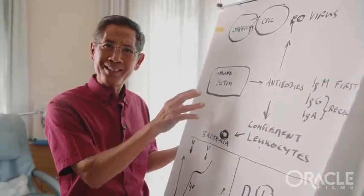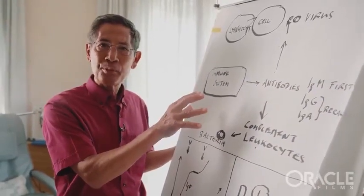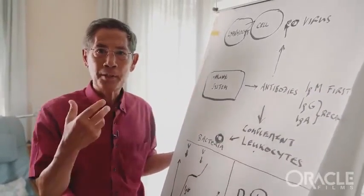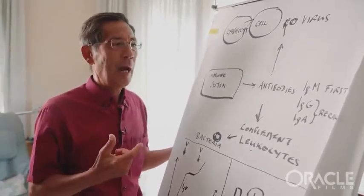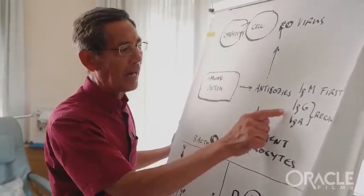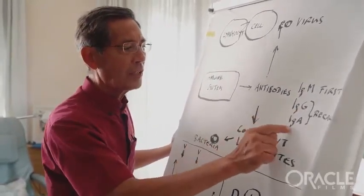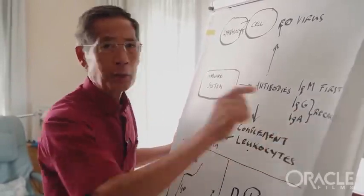However, if the immune system has seen this virus before and remembers it, because the immune system has a memory, then it quickly makes other antibodies which are called IgG and IgA. These are recall antibodies.